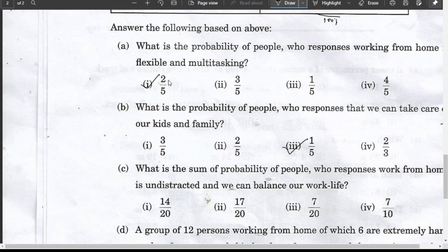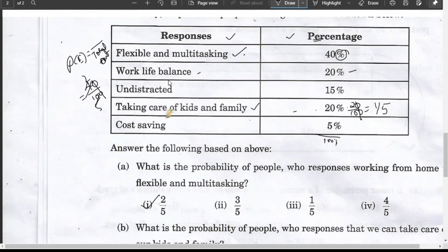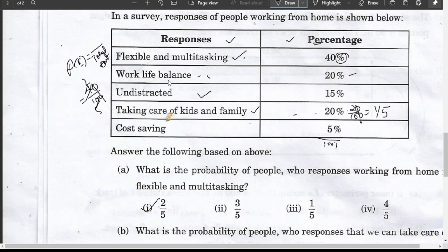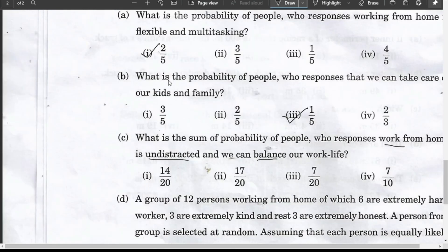Question (c): What is the sum of probability of people whose responses are work from home is undistracted and we can balance our work-life? Sum of probability of undistracted and work-life balance. If 20% equals 1/5 as I did before, undistracted will be 15 by 100, which cancels to 3/20. Sum of both will be 1/5 plus 3/20. Taking LCM 20, that's 4/20 plus 3/20 equals 7/20. Option three.